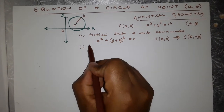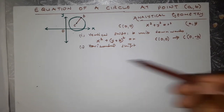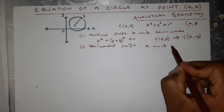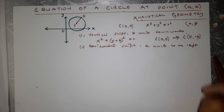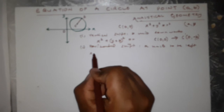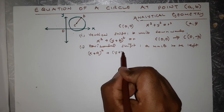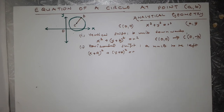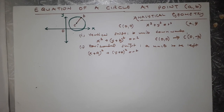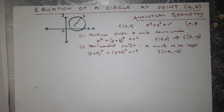Secondly, let's say there was a horizontal shift. Our circle was shifted A units to the left. So it's going to be (x + a) all squared plus (y + b) all squared equals r squared. Our new center now will be (-a, -b).